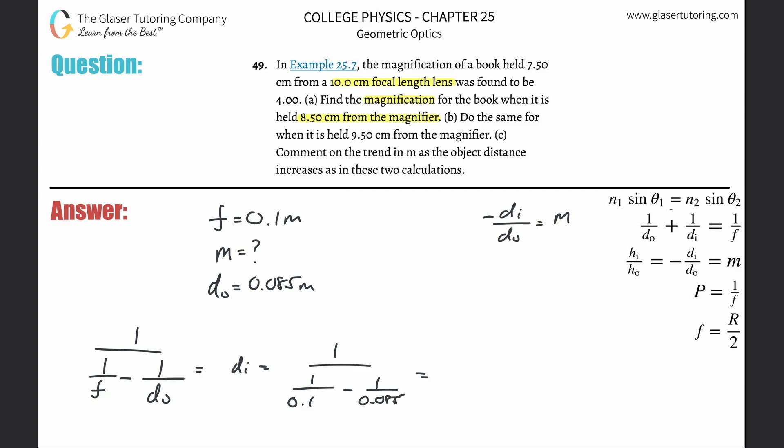Do the denominator first: one divided by 0.1 minus one divided by 0.085. Get about negative 1.76 and then do one divided by that value. Here is now the image distance. It is negative 0.567 roughly, and that'll be in terms of meters.